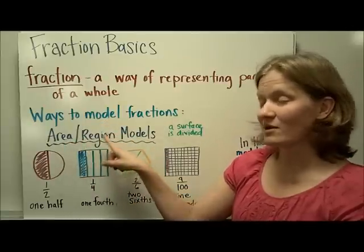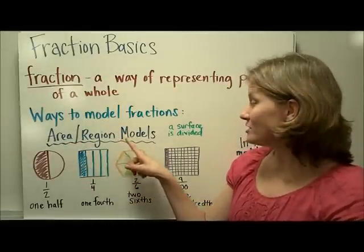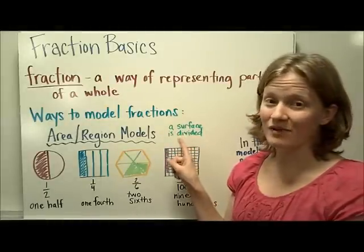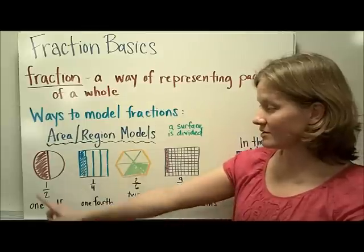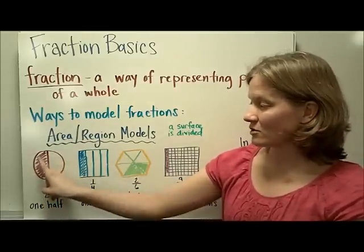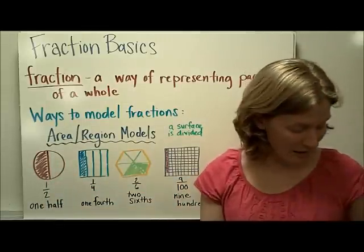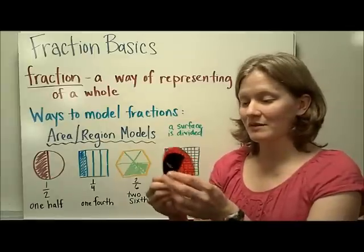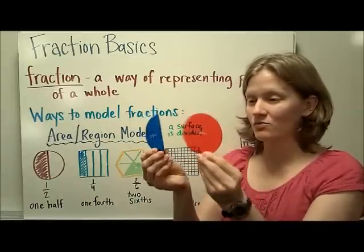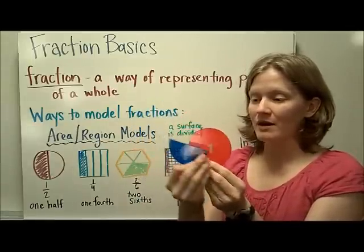First, the area or region models. In the area and region models, a surface is divided into equal parts. Here are some examples. A circle is divided into one half and we will use manipulatives in class that model this: the one whole and then the one half piece.